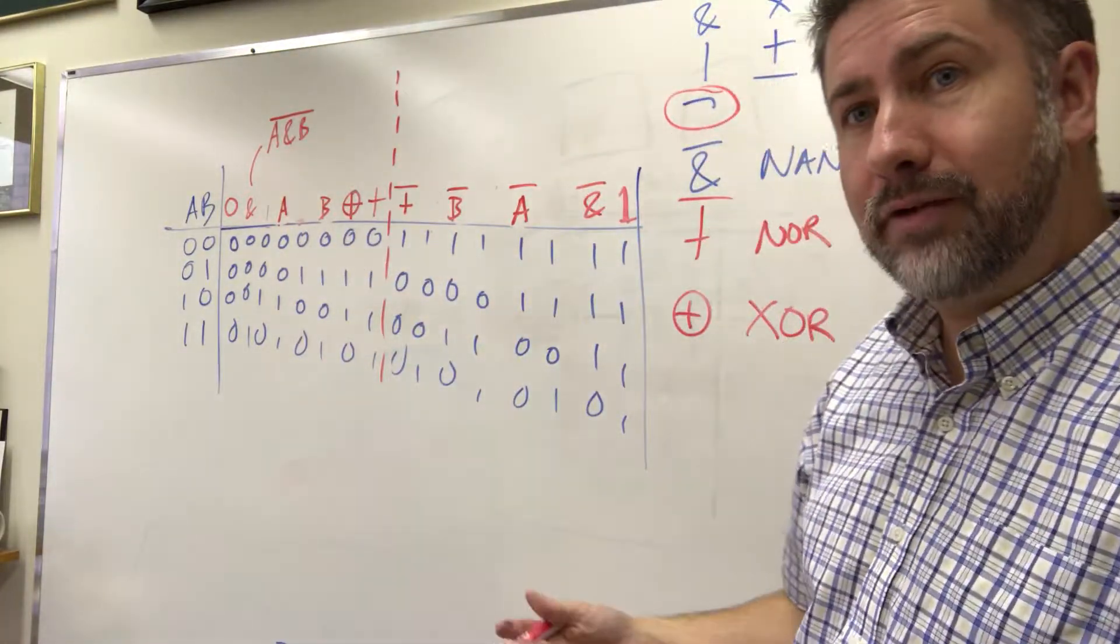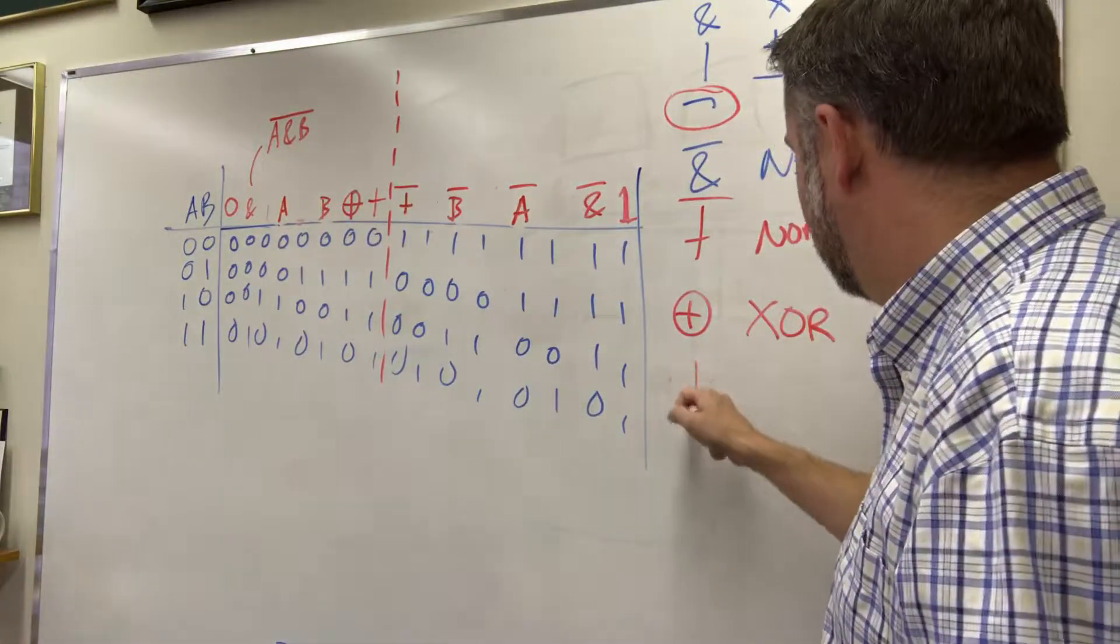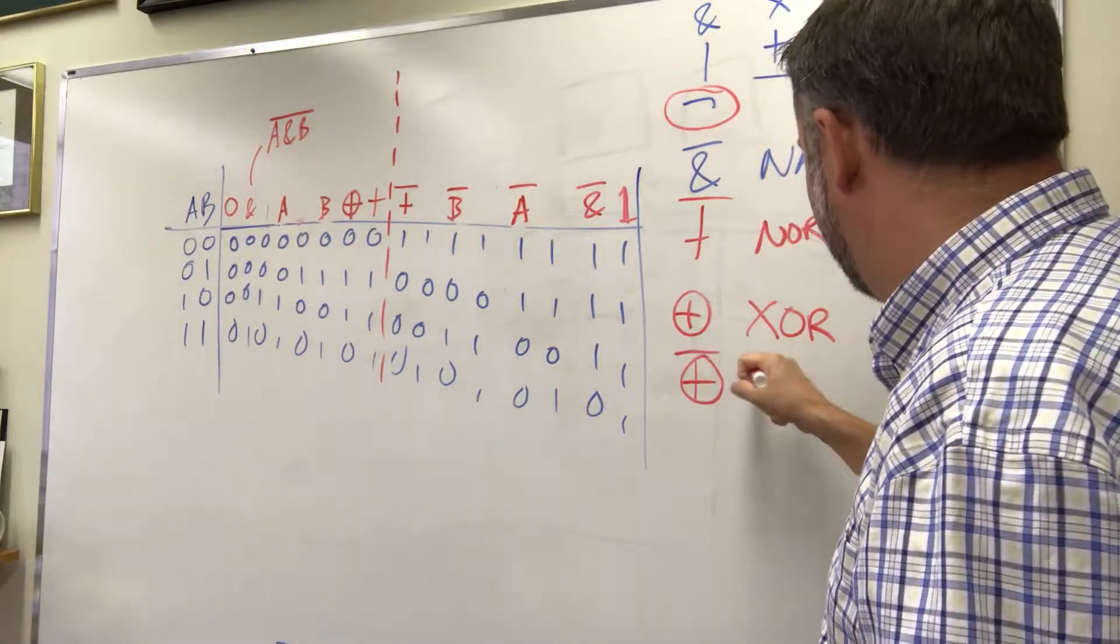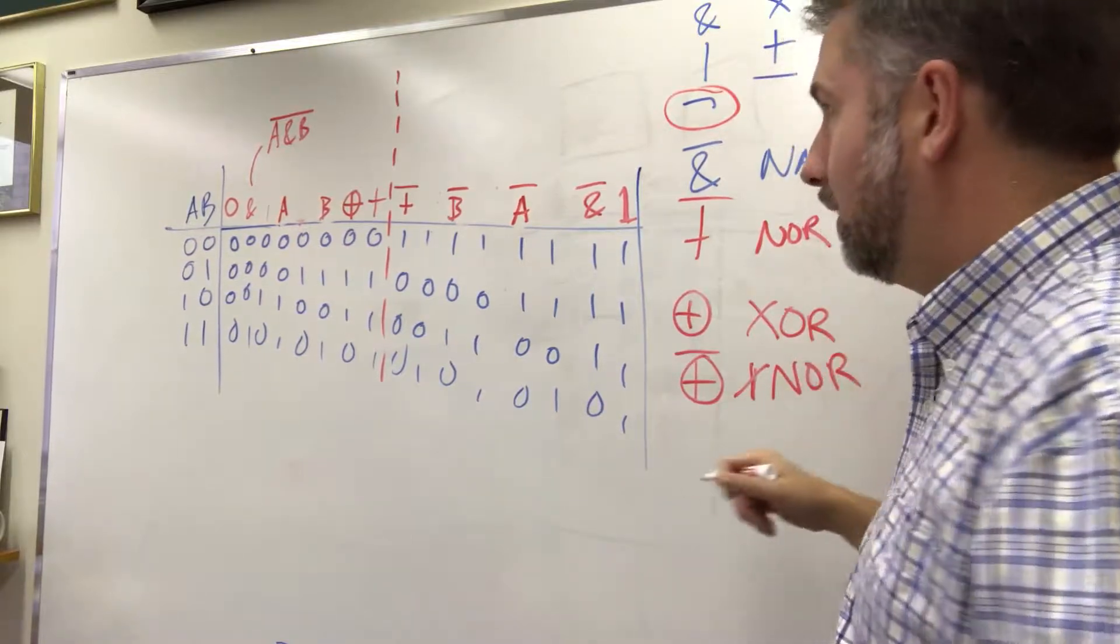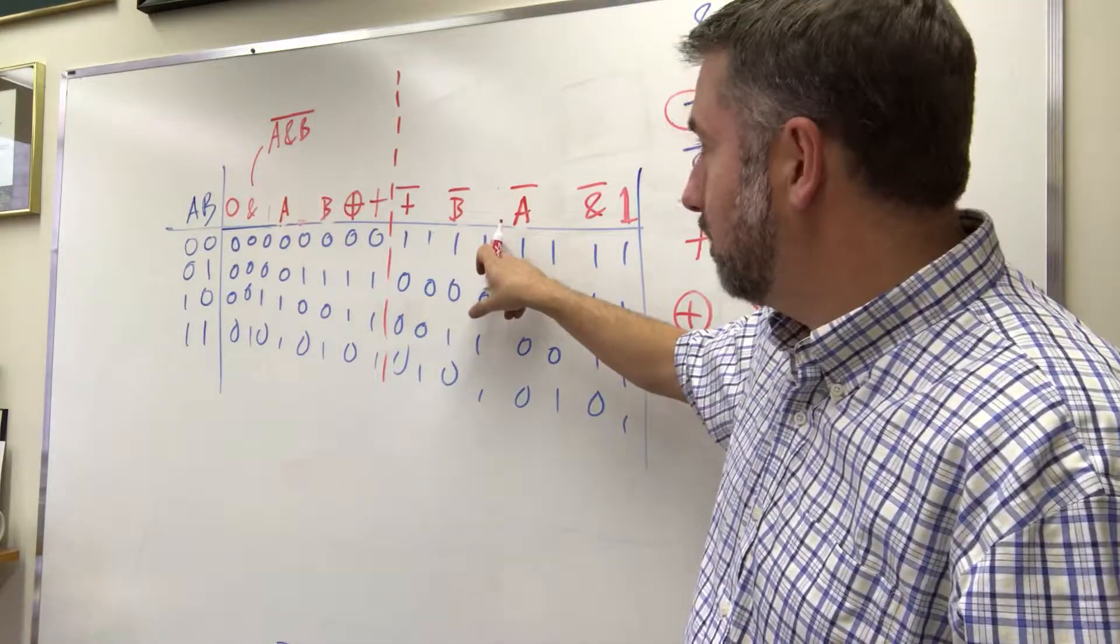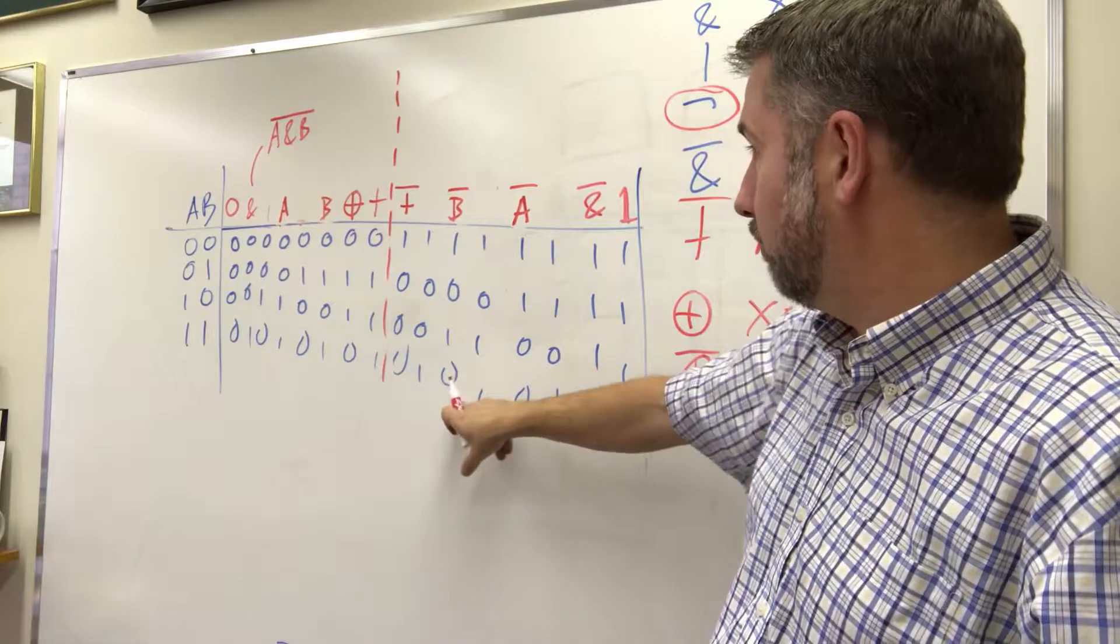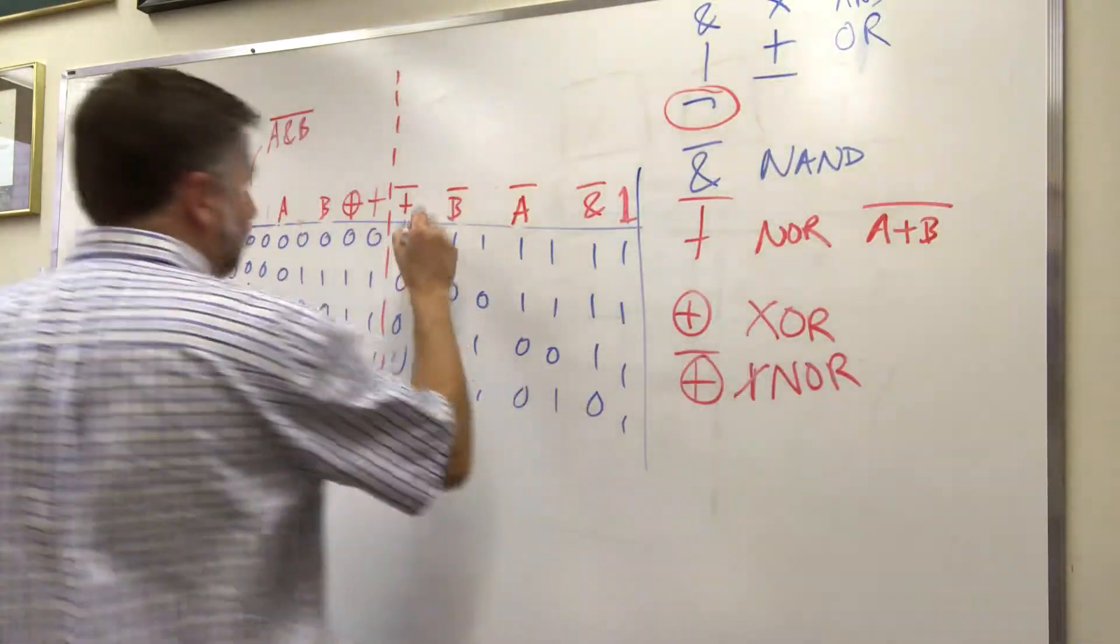And similarly we have its opposite. One or the other but not both. We call the opposite of that exclusive NOR. And this is true if they're both 0 or if they're both 1. And this is right here.